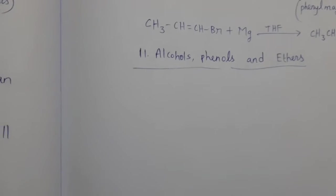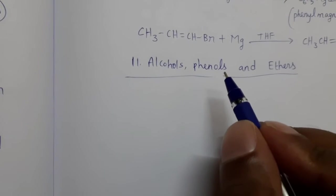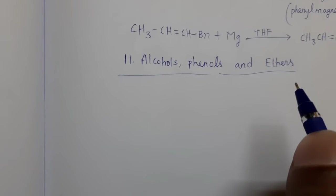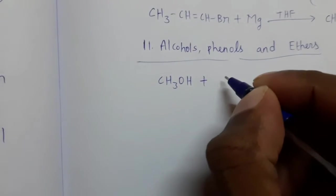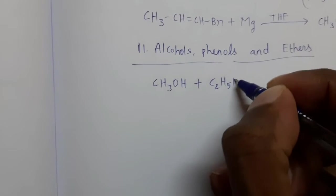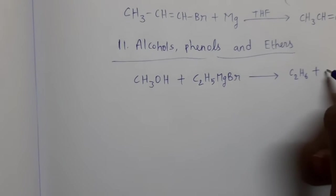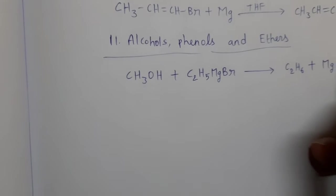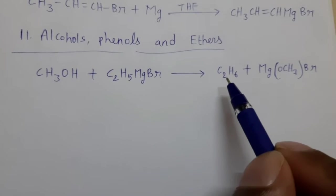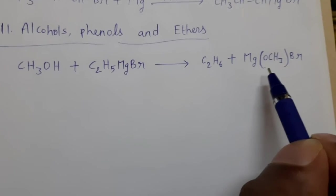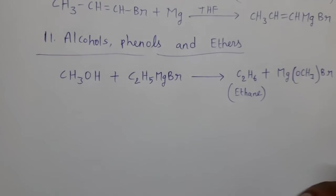Alcohols react with Grignard reagents and form alkanes. Phenols also react with Grignard reagents and form corresponding aromatic compounds. For example, CH₃OH (methyl alcohol) reacts with Grignard reagent C₂H₅MgBr (ethyl magnesium bromide) to form C₂H₆ (ethane) plus MgOCH₃Br. So alcohol reacts with Grignard reagent to form alkane.